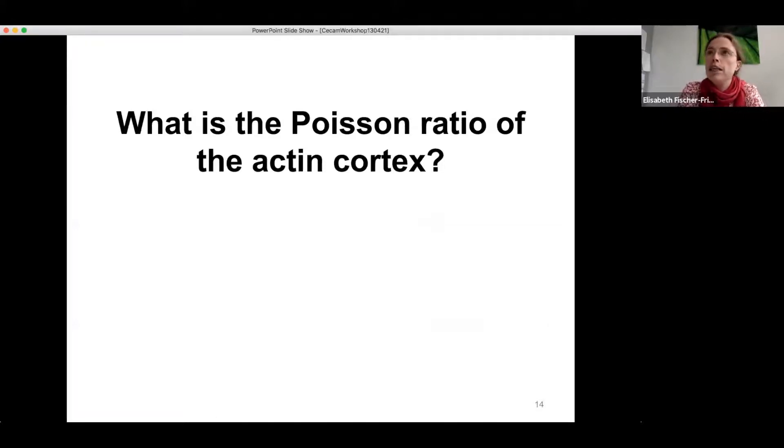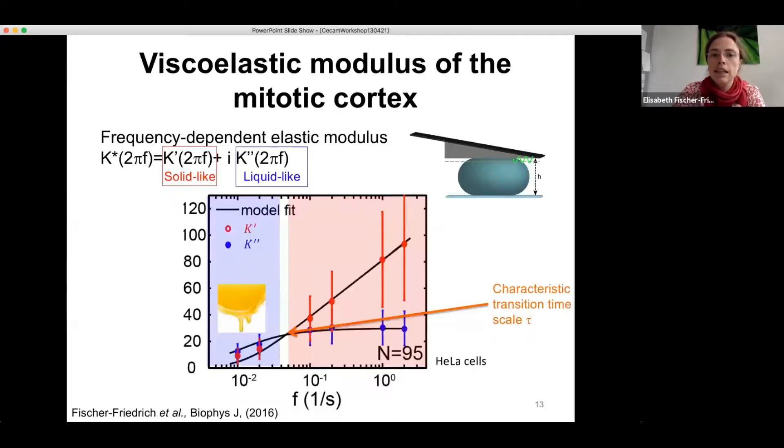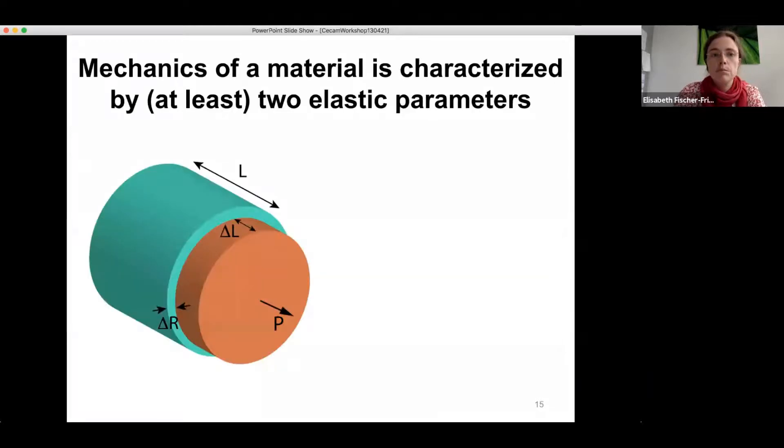Okay. So so far I have brushed a little bit under the rug that every material needs at least two mechanical parameters to describe its mechanics. So here we had an effective elastic modulus that describes the resistance towards this cortical dilation at a specific confinement height of the cell. But in principle we need at least two elastic parameters. So for instance, the Young's modulus and the Poisson ratio of the material. And if the material is not isotropic, one needs even more parameters than that.